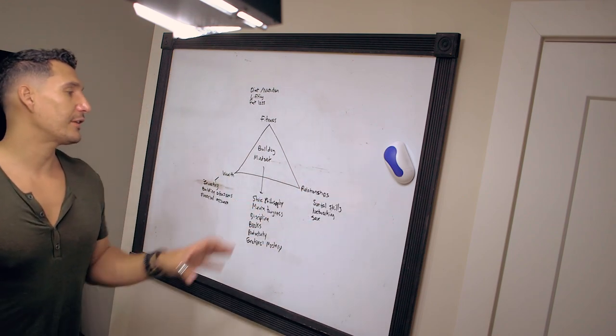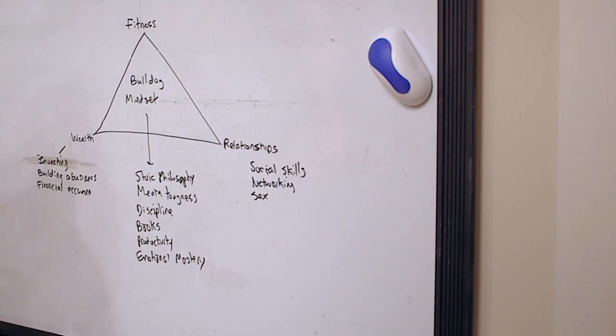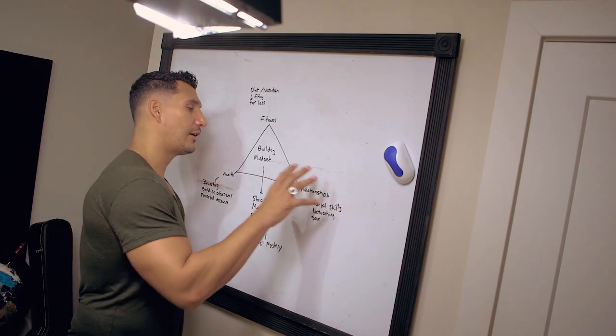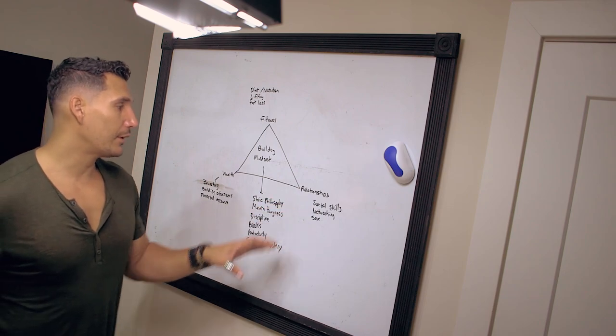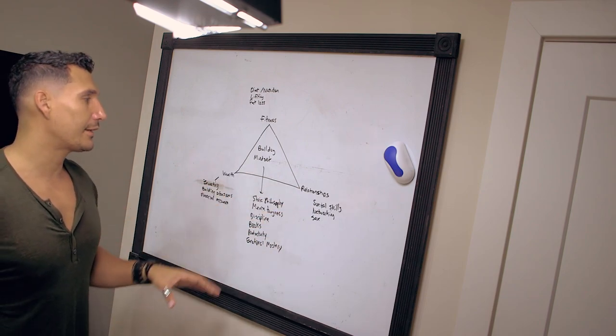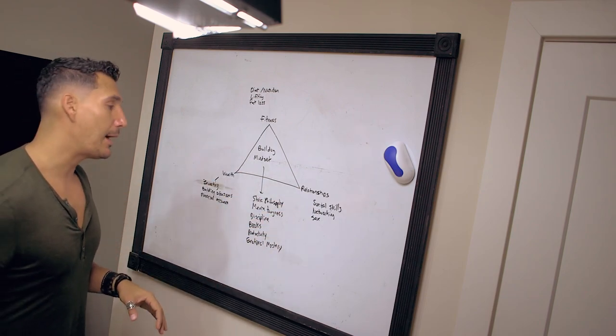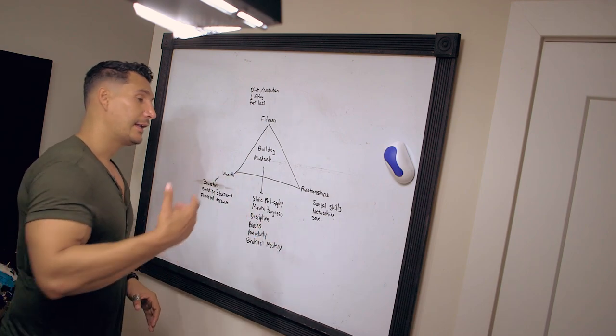And then on the relationship side. This is going to cover things like social skills, networking, sex, all the things that are relationships between other people. This is going to be one of those things that's also really important to be successful in life. I've talked a lot already about overcoming social anxiety and developing social skills.